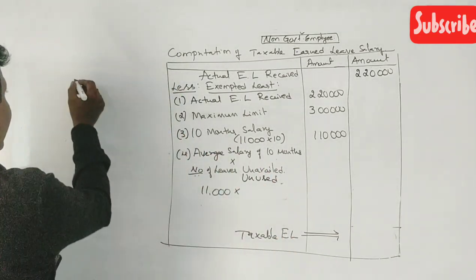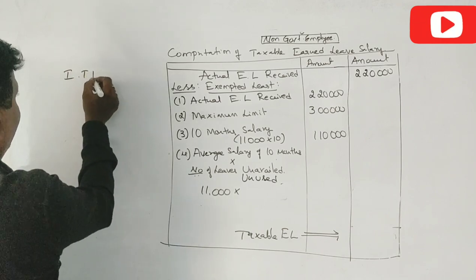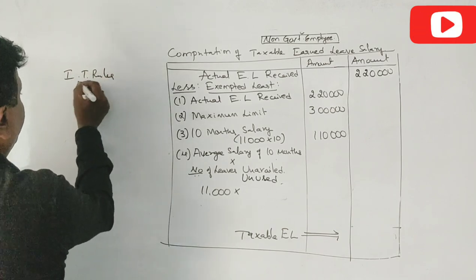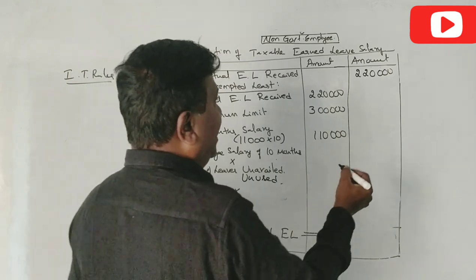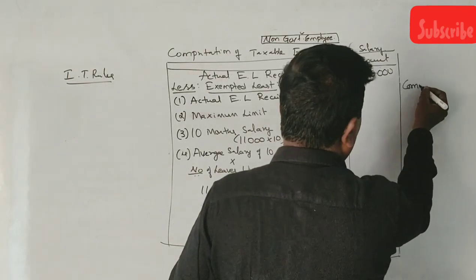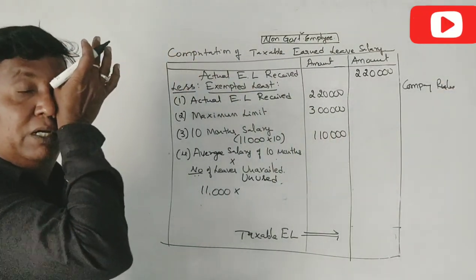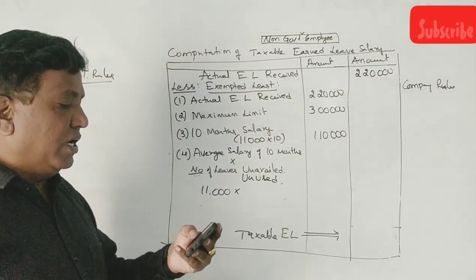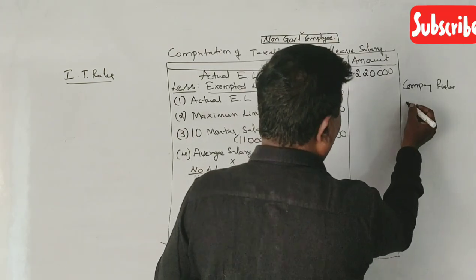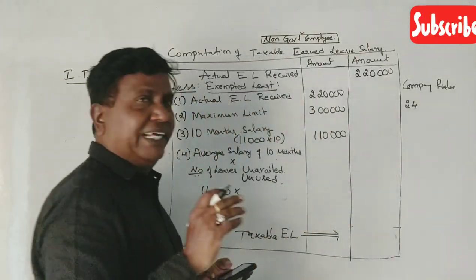Now, we have income tax rules. One, we have IT rules and company rules. Now, we have to calculate the number of leaves. First, we have company rules.